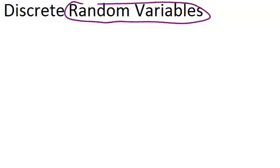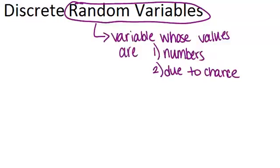In this video, we are going to learn about discrete random variables. First, let's figure out what the term random variables means. A random variable is a type of variable whose value has to be a number and it has to be due to chance. The word random has to do with the fact that the variable has to be due to chance — it can't be completely predictable. It can change in a random way.